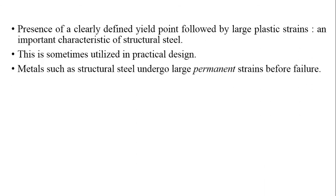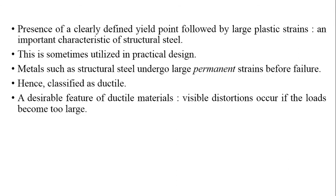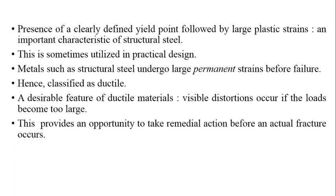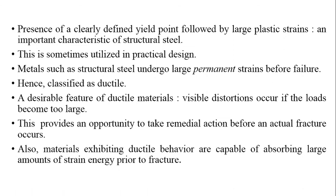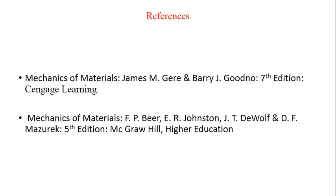Metals such as structural steel undergo large permanent strains before failure and are classified as ductile. A desirable feature of ductile material is that visible distortions occur if loads become very large, providing an opportunity to take remedial action before actual fracture occurs — the failure will be ductile rather than sudden brittle failure. Also, materials exhibiting ductile behavior are capable of absorbing large amounts of strain energy prior to fracture. For this topic, I have referred to Mechanics of Materials by James M. Gere and Mechanics of Materials by Beer and Johnston. Thank you very much.